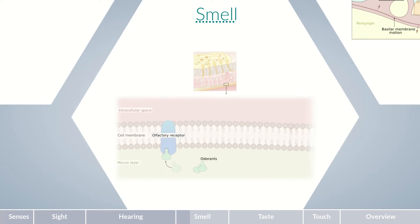These receptors contain polypeptide chains that form a binding pocket for odorant molecules. Although the receptors aren't very selective and can bind to different members of a family of molecules, humans require approximately 350 different receptors that work together to enable the sense of smell. However, each olfactory sensory cell only expresses one receptor type at any given time.